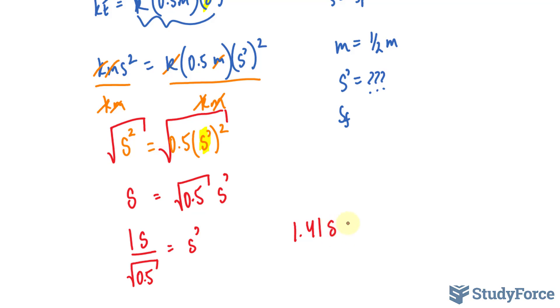So we have to increase the original speed by a factor of 1.41 so that when we halve the mass, we still maintain the same kinetic energy. Another way to think of this is that we have to increase the speed by 41% of the original S.